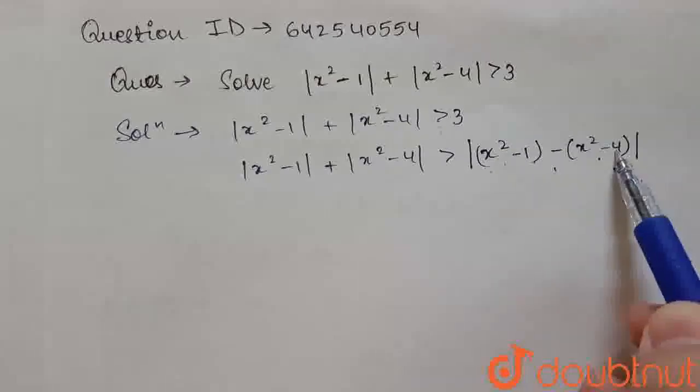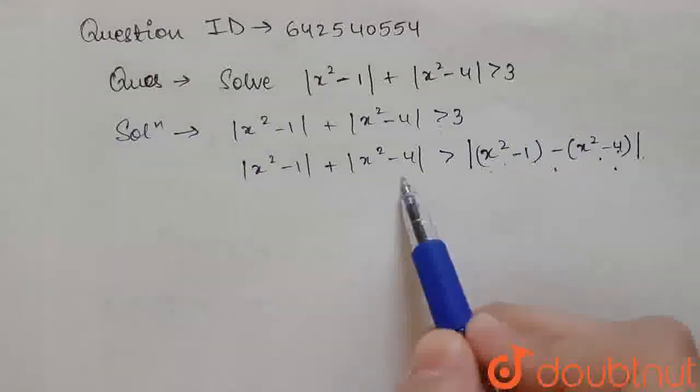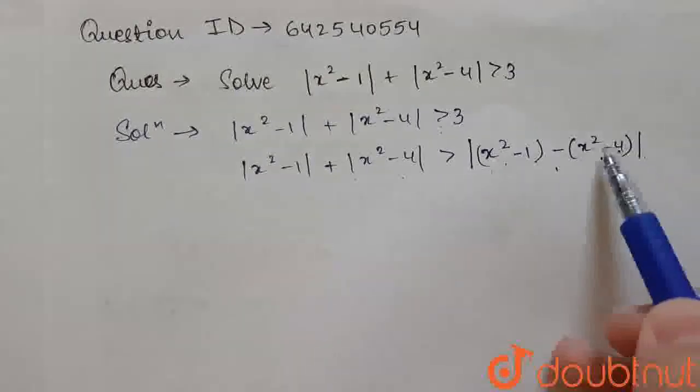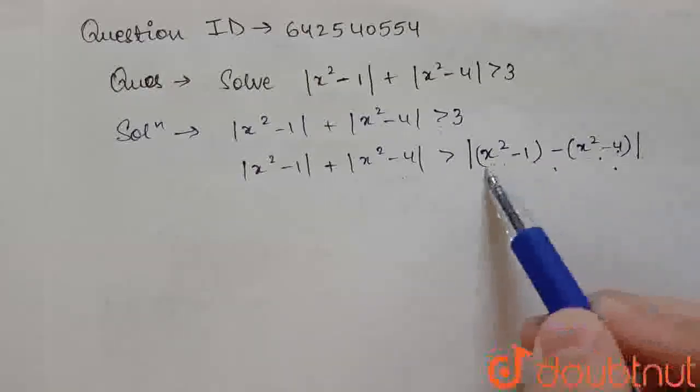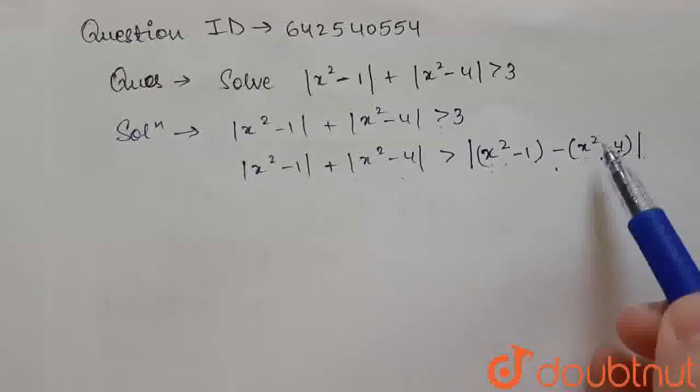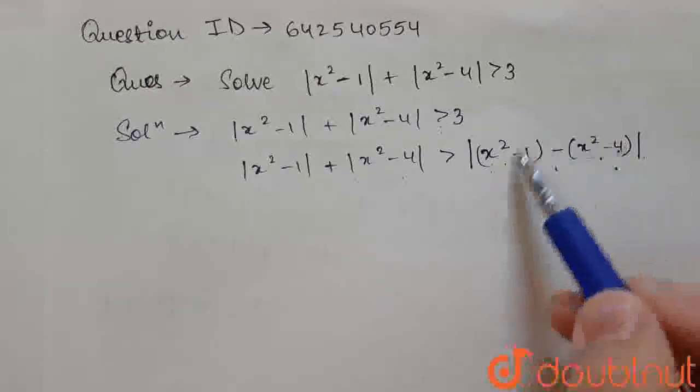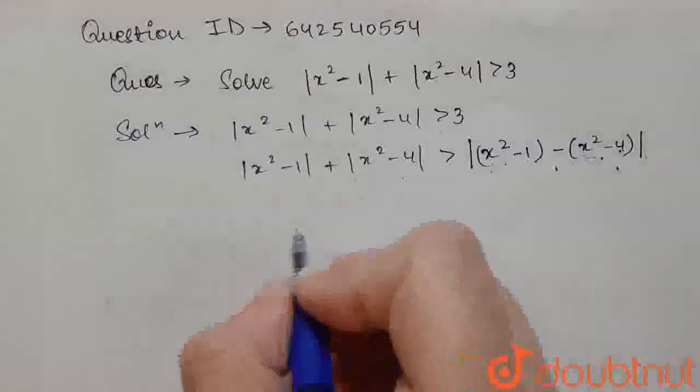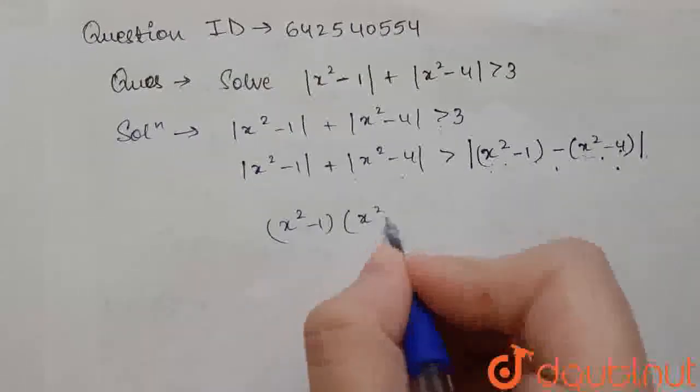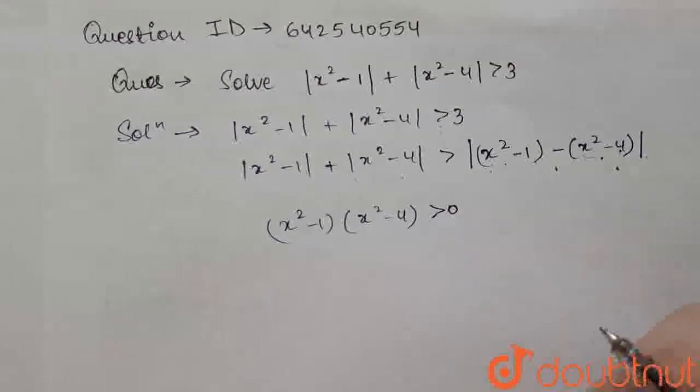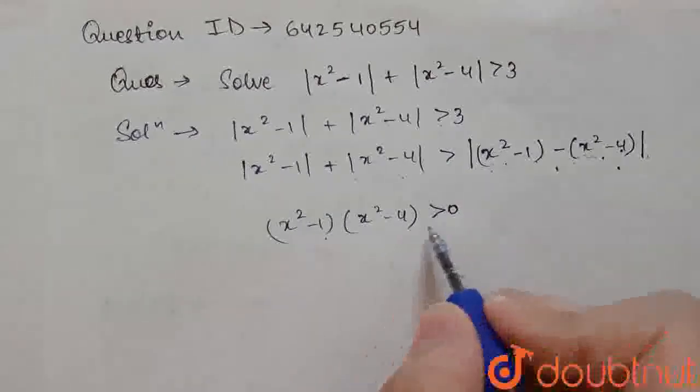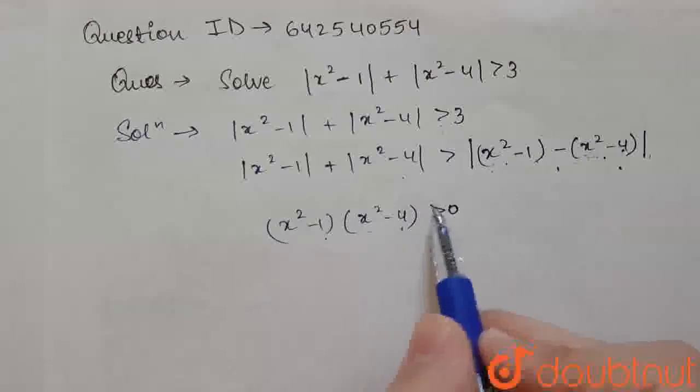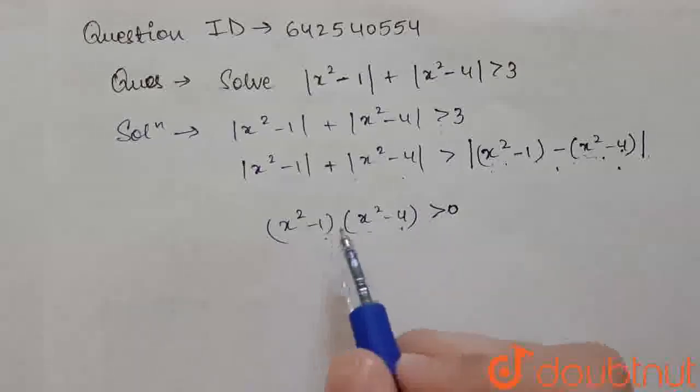Now on subtracting these two values, the value will be less than this. The value will be less than mod of addition. So this is possible only when these both values, x square minus 1 and x square minus 4, have the same sign. If they have opposite signs, the values will get added up. So they must have the same sign.